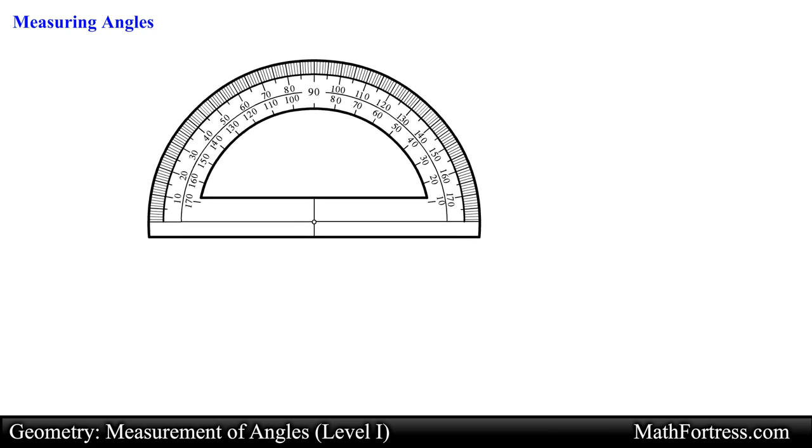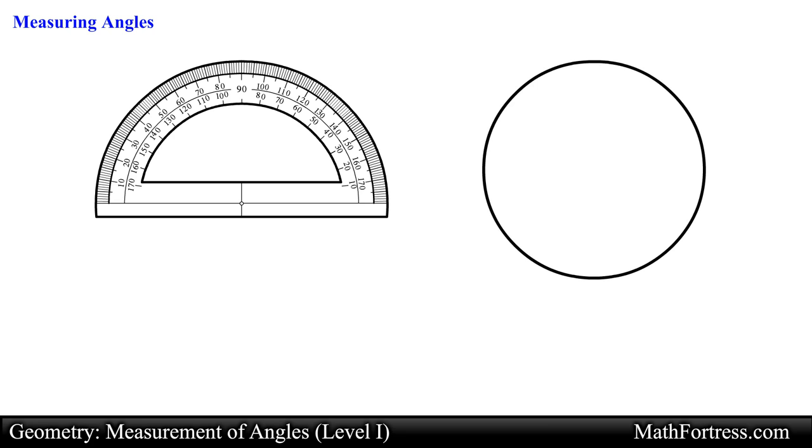You can think of the measure or size of an angle as the amount of turning you would do if you were at the vertex looking along one side of the angle and then turn to look along the other side of the angle.